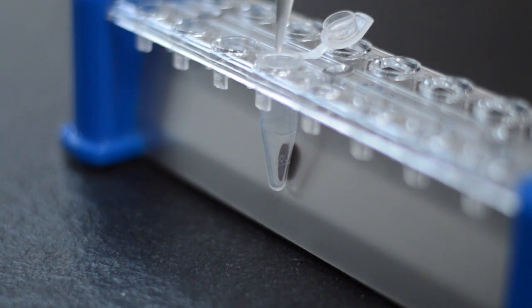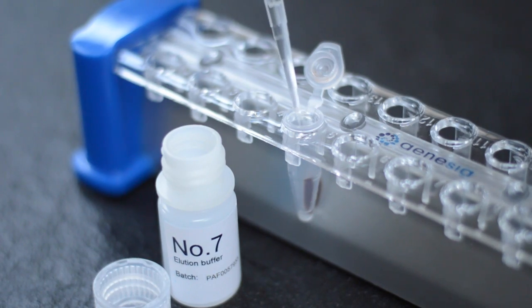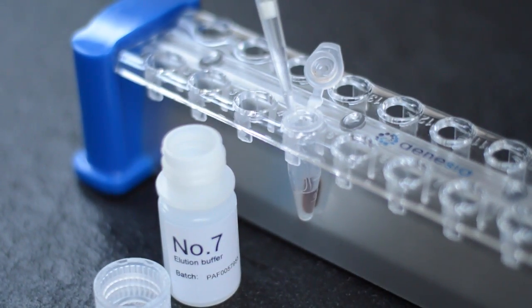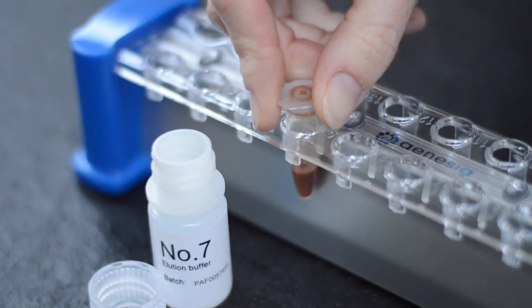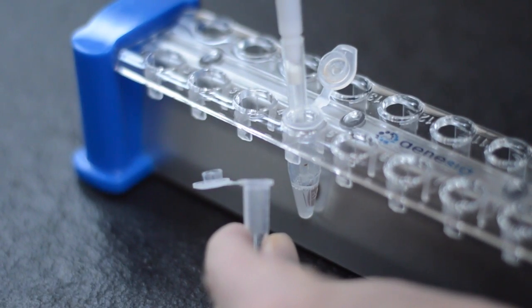Once the liquid from tube 6 is removed, leave the lid open for 10 minutes to allow the particles to dry out. Now it's time to wash the DNA off those beads with a small volume from tube 7. And you're done. Your pure solution of DNA is ready to be analysed.